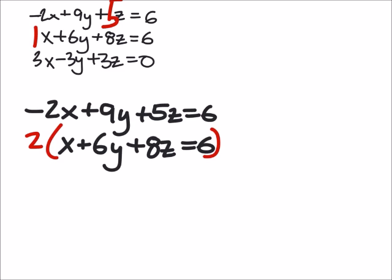I'm just going to multiply this equation by two, so that I have opposite coefficients of x. And that gives me 2x plus 12y, if I have enough space, 16z equals 12. And that top equation stays the same.